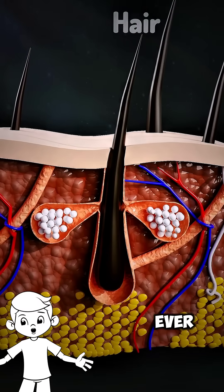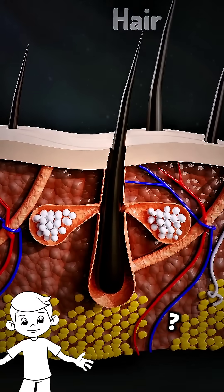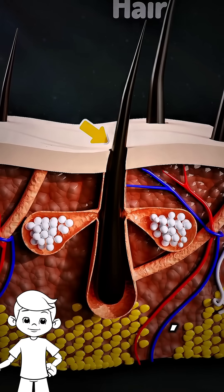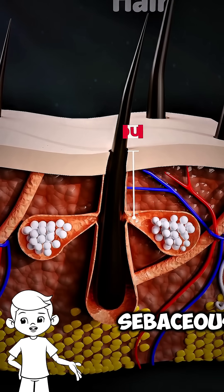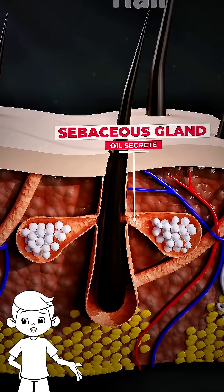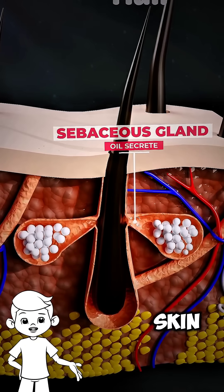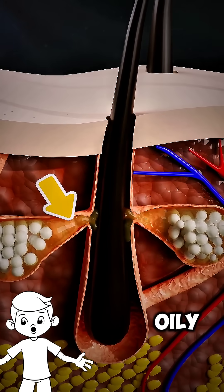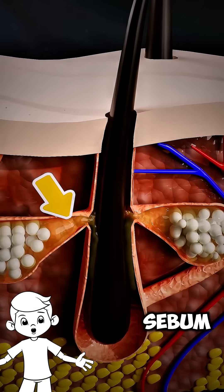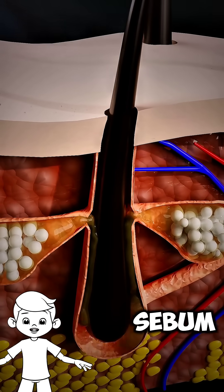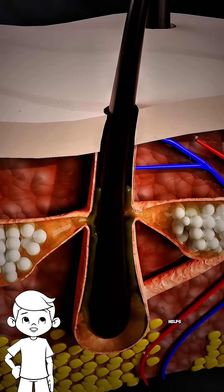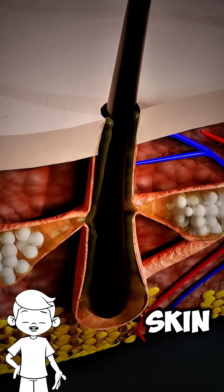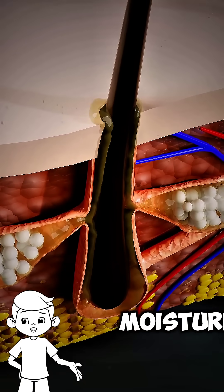Why do pimples occur? Ever wondered about it? This is the core of the skin, and below the core, we have the sebaceous gland. To prevent our skin from drying out, this gland produces an oily substance called sebum. Sebum naturally helps the skin by secreting around the hair and skin to maintain moisture.